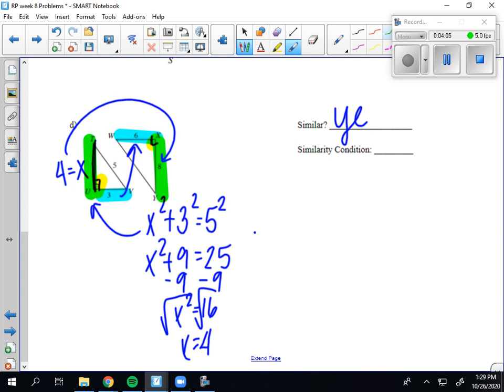So I would say yes by side, angle, side. Another way that you could do it is we actually have the capability of finding this side using the Pythagorean theorem. So 6 squared plus 8 squared equals y squared if I call that side y.